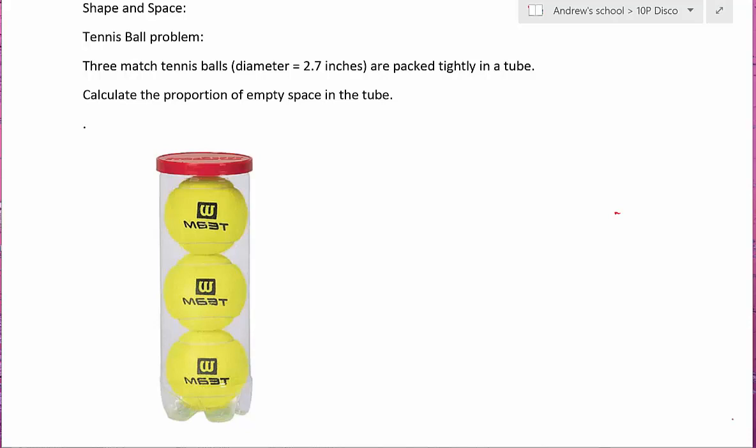It tells us that the diameter of the tennis ball is 2.7 inches, that is the entire distance across the top, and therefore the length of the tube must be 2.7 and another 2.7 and another 2.7. So we have a diameter of 2.7 on the top and a total length of 3 times 2.7 which is 8.1.